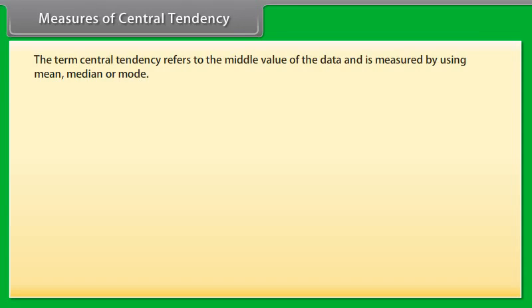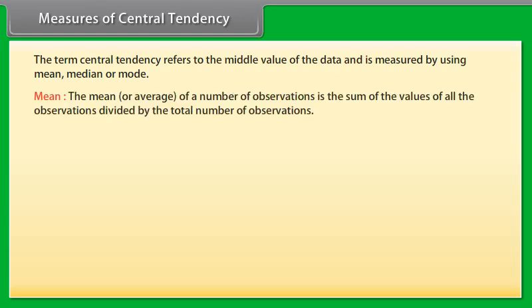Measures of central tendency: The term central tendency refers to the middle value or a typical value of the data and is measured using mean, median or mode. The mean or average of a number of observations is the sum of the values of all the observations divided by the total number of observations. It is denoted by X bar.